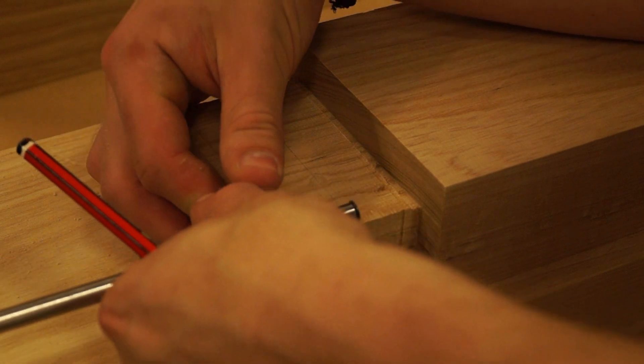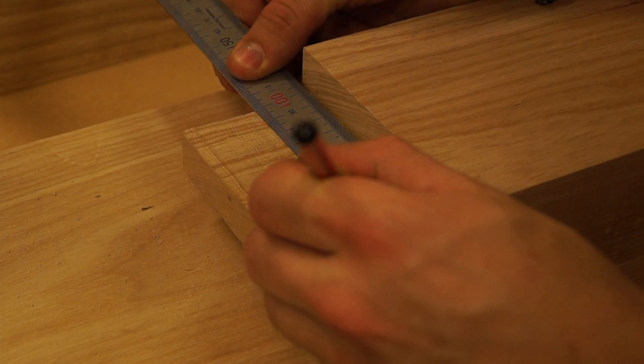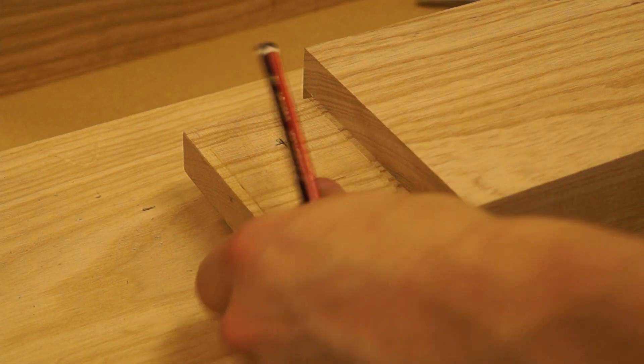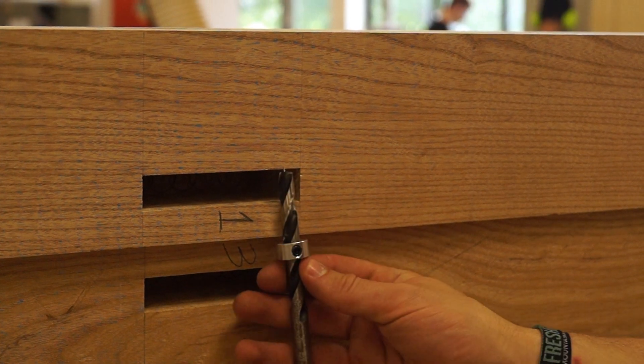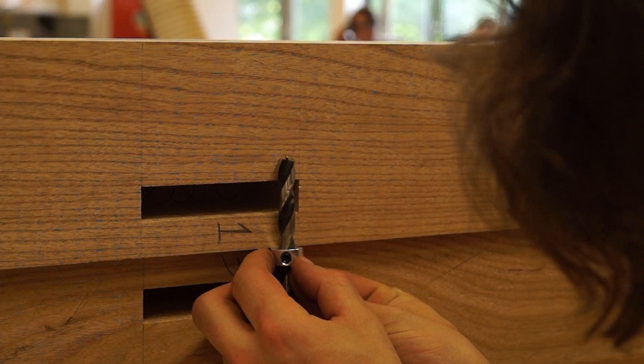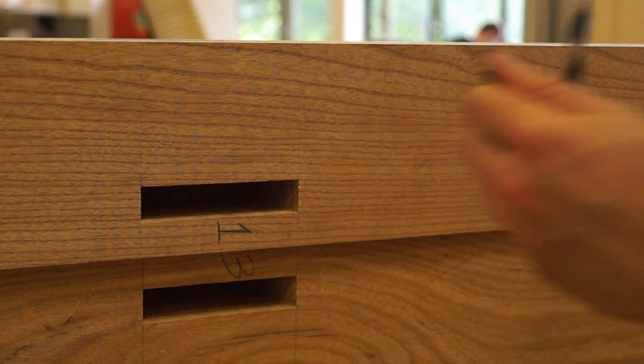If you use draw bores like this or if you've got an awkward mortise and tenon to clamp up, this is a great way of doing it. Put an offset in there and it yanks that tenon into the mortise and it makes it absolutely rock solid.